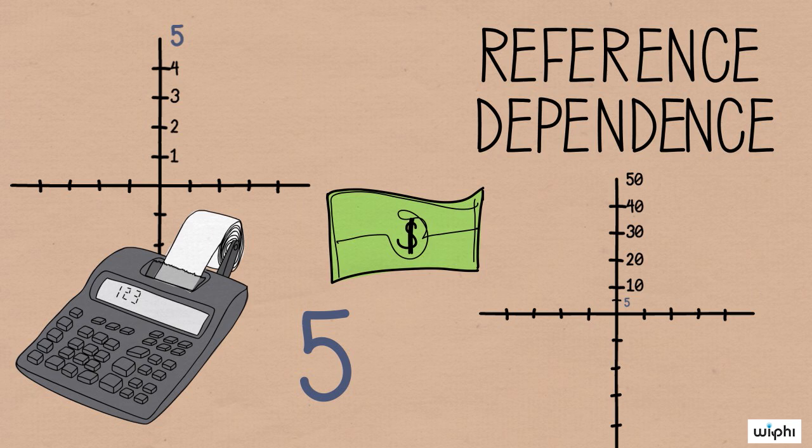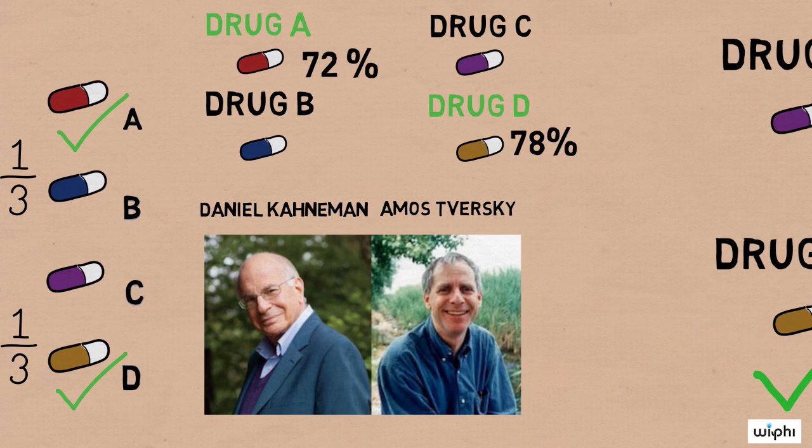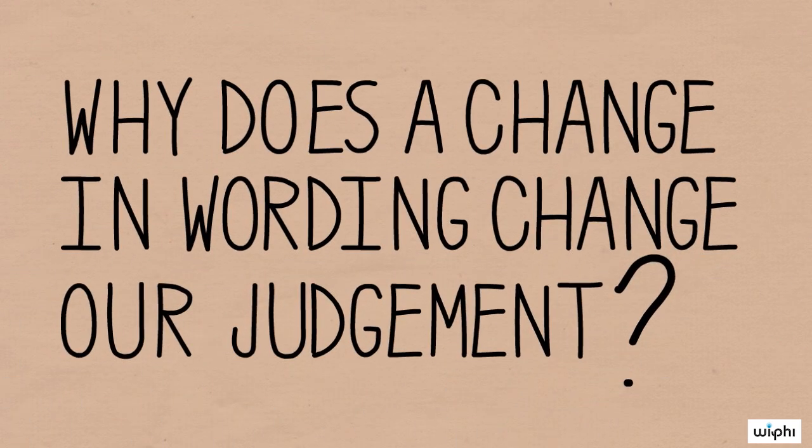You think, hey, I'm one dollar richer. Because of reference dependence, you don't think of the options presented earlier in terms of the absolute number of lives saved. Instead, you frame each choice relative to some status quo. And that's why the wording matters.